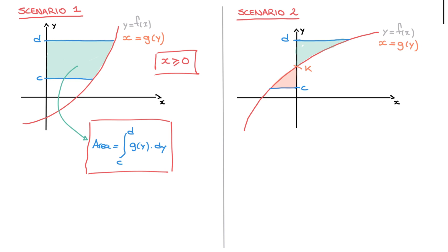Now that that's done, we calculate each of the two areas. For the area on the right-hand side of the y-axis, all of the points on this portion of the curve have an x-coordinate greater than or equal to zero. Consequently, we can calculate this green area using the same method as before — the definite integral from k to d of g of y. For the orange area, on the other hand, we need to be careful. It would be a mistake to state that the area equals to the definite integral from c to k of g of y.